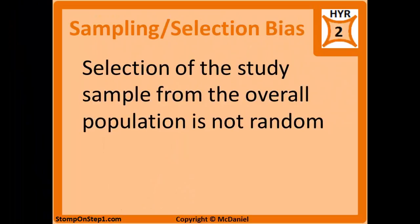Sampling bias and selection bias are very similar. If you really want to dive into the minutia they are different, but for the purposes of Step 1 you can use both terms pretty similarly. In both cases you have a selection of the sample from the overall population that is not random, resulting in low generalizability and low external validity, because your study's population is different than the overall population.